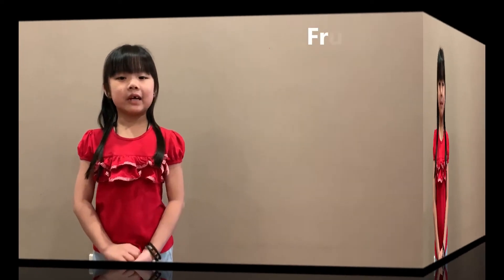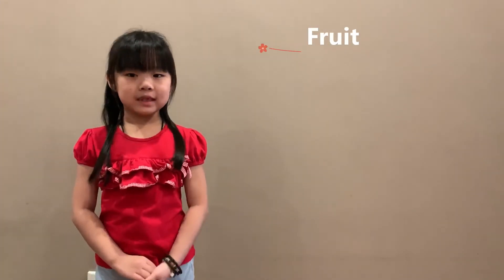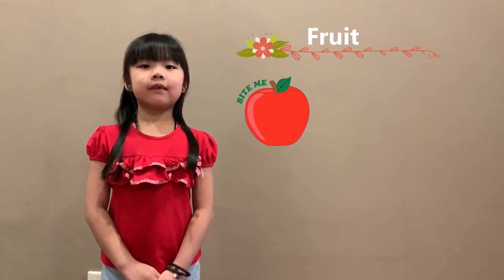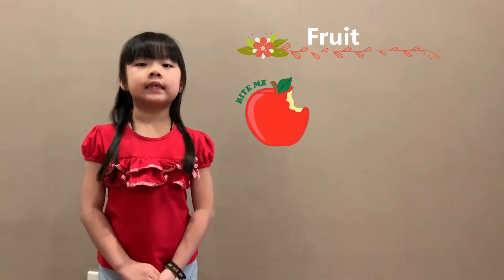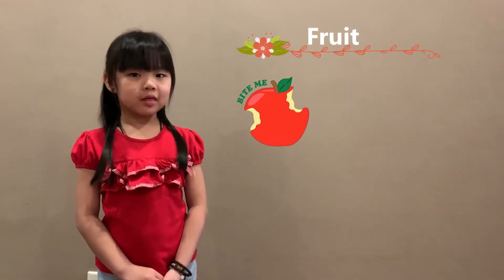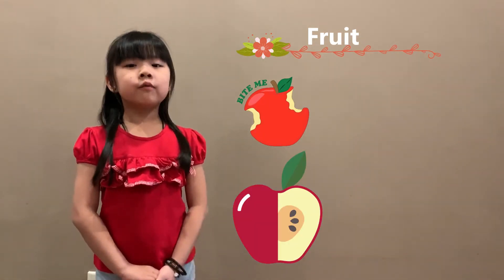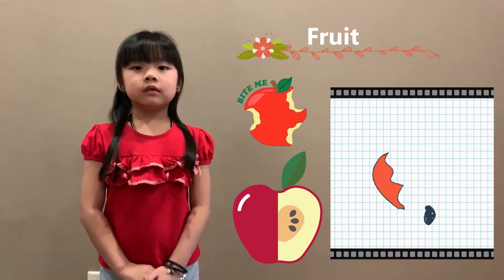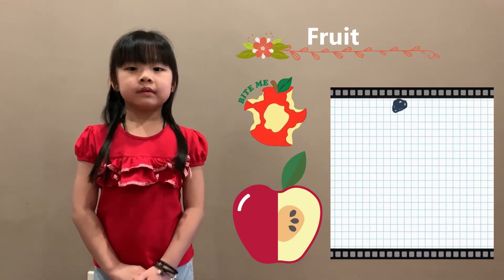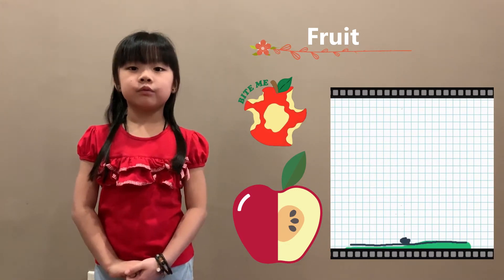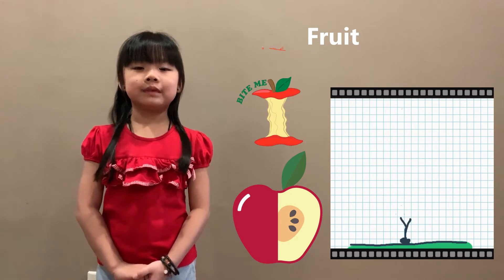Now let's talk about fruits. Fruits are also a part of the plant, and some fruits are eatable, some are not. Fruits also have seeds so the seeds will help to reproduce them.